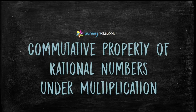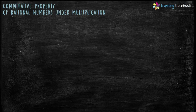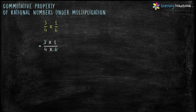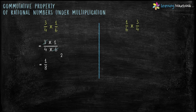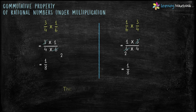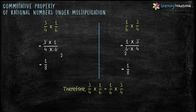Now let's see commutative property of rational numbers under multiplication. First example: multiply 3 by 4 and 1 by 6. We get 3 into 1 by 4 into 6, which equals to 1 by 8. Now, let's reverse the order of these two rational numbers and multiply 1 by 6 with 3 by 4. We get 1 into 3 by 6 into 4. Simplify it and we get the product as 1 by 8. So in both the cases, the answer remains the same. Therefore, 3 by 4 into 1 by 6 equals to 1 by 6 into 3 by 4.